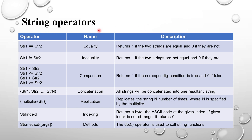Now we will see string operators — these are all the operators, the name of the operator and the description. The first one is the equality operator, using the double equal symbol: string1 equals string2. How it will compare: if both strings are equal it will return 1, otherwise it will return 0. It will compare in a lexicographical manner.